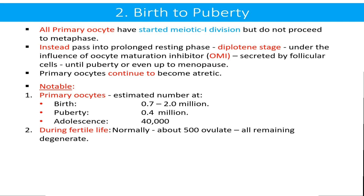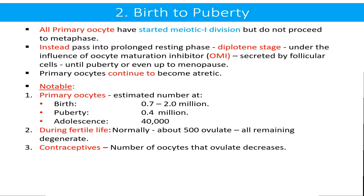During fertile life, normally about 500 ovulate; all remaining degenerate. Contraceptives used to avoid pregnancy decrease the number of oocytes that ovulate.